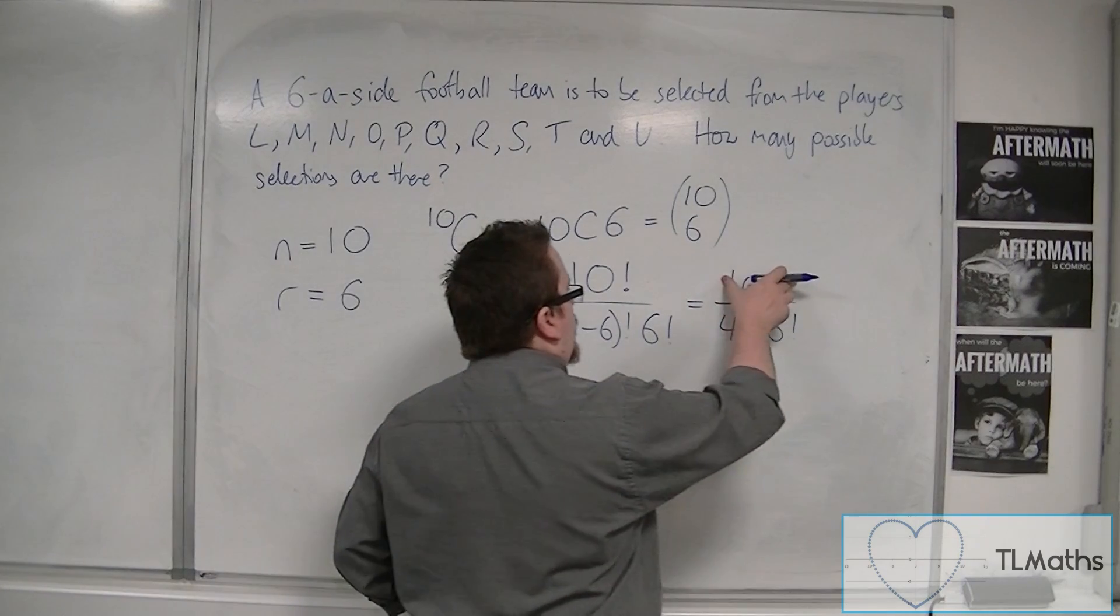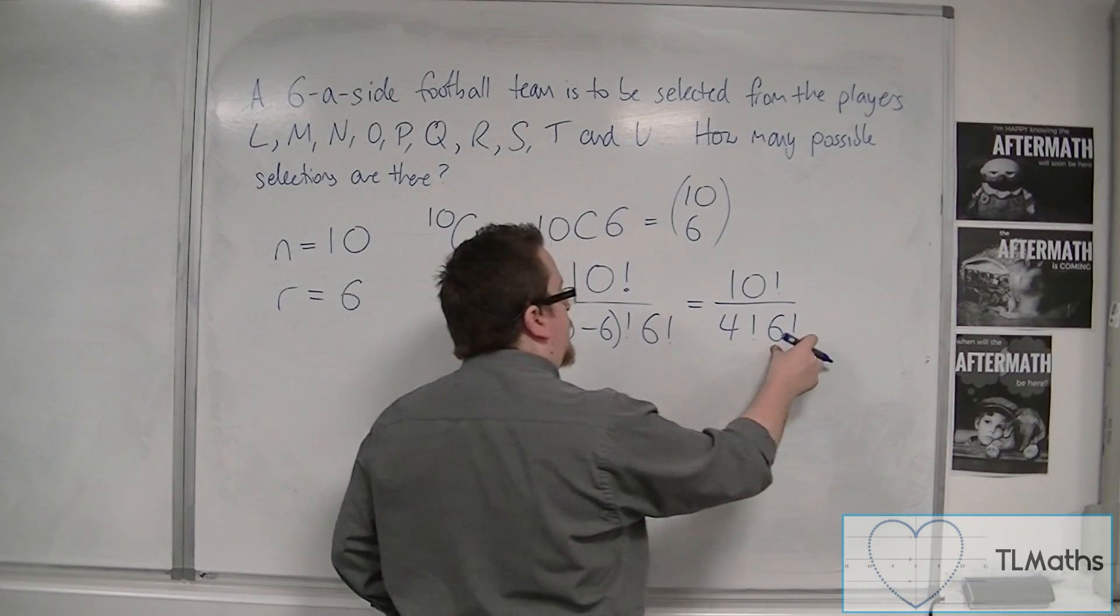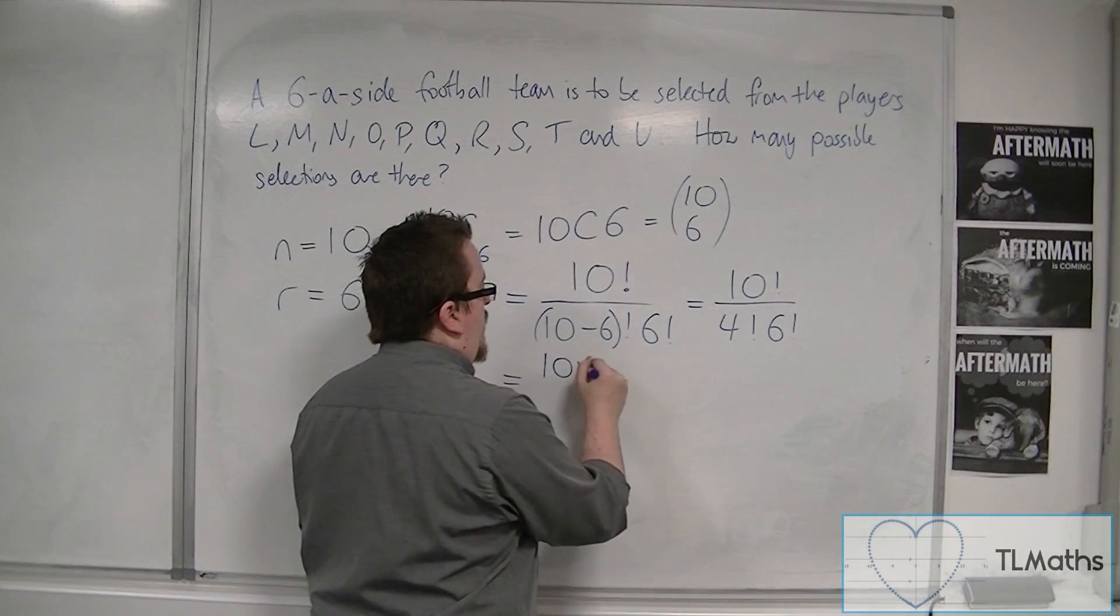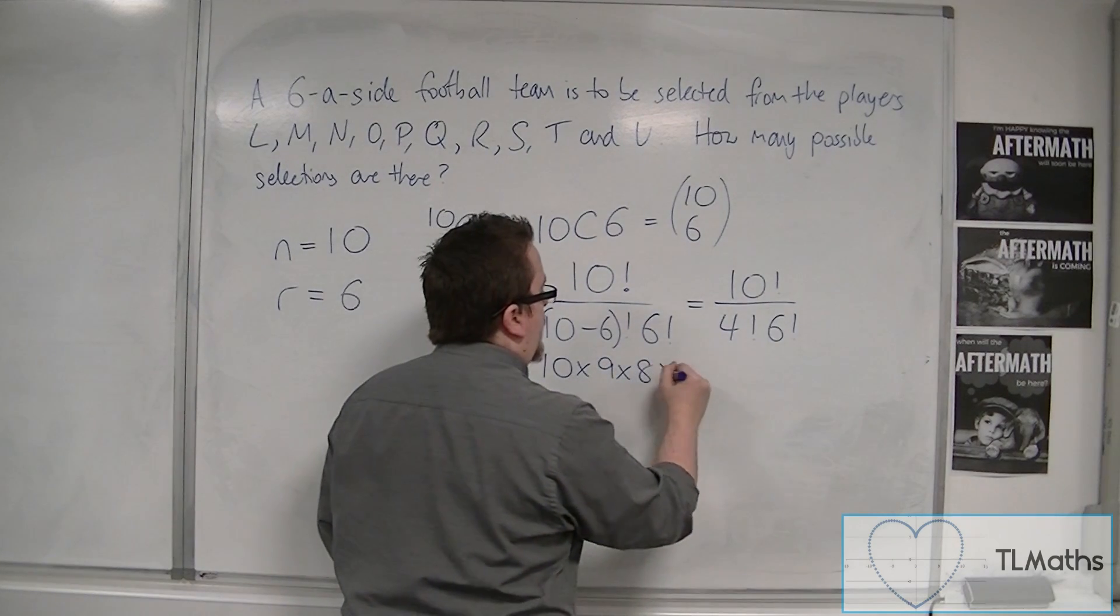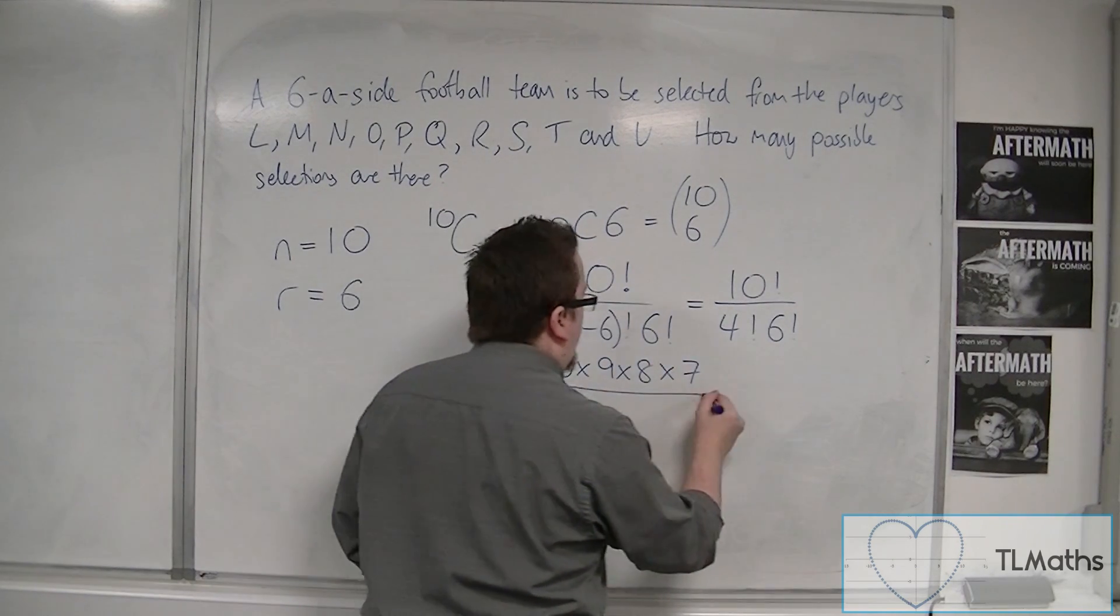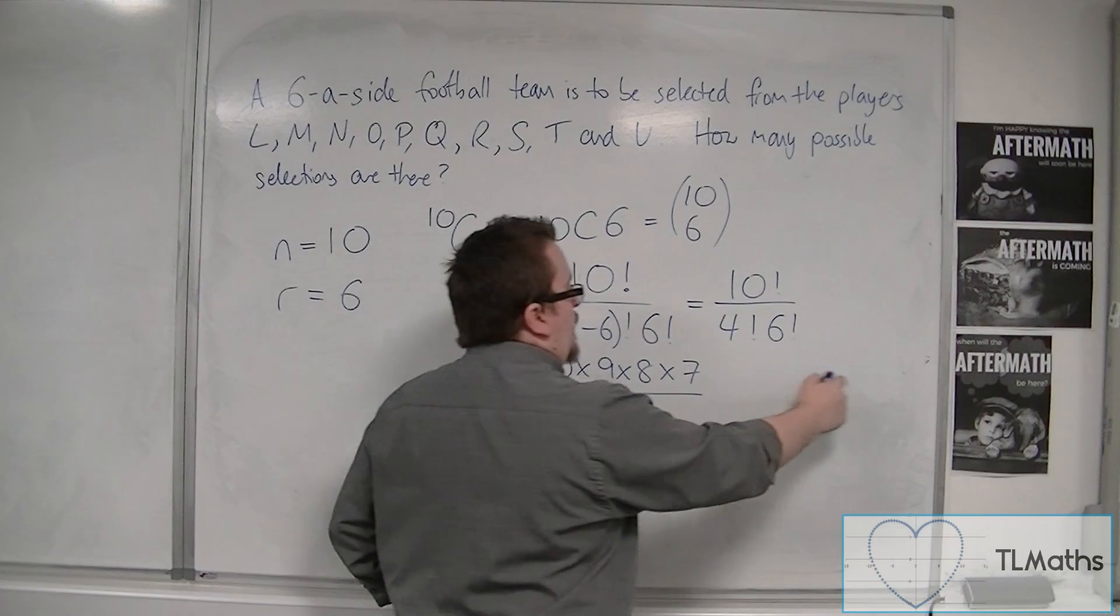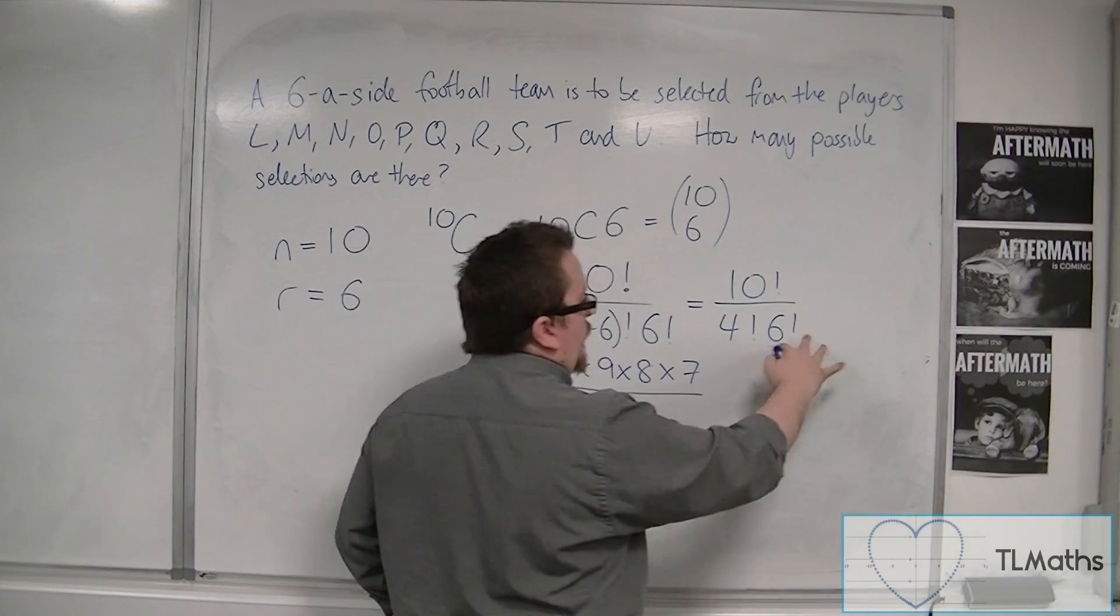So 10 factorial divided by 6 factorial leaves me with 10 times 9 times 8 times 7. Because the 6 times 5 times 4 times 3 times 2 times 1 has cancelled with that one.